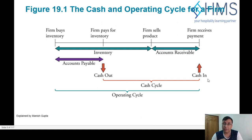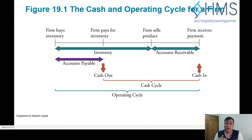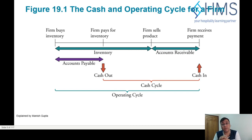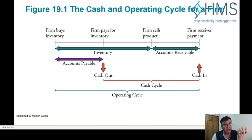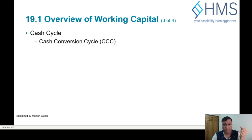Operating cycle is generally longer and cash cycle is generally shorter because it is offset by the accounts payable timing. Companies measure how many days it takes to generate cash so they can understand how many days of working capital they actually require and how much that amounts to.